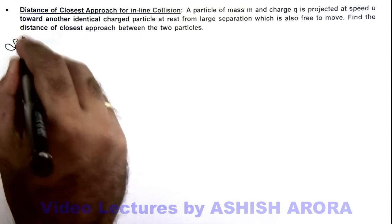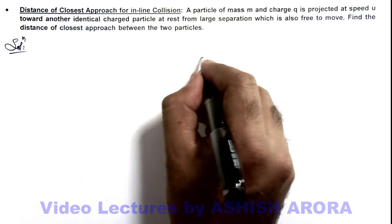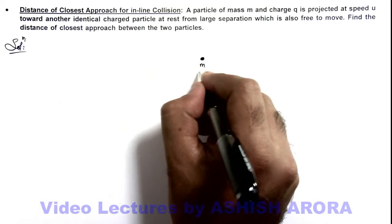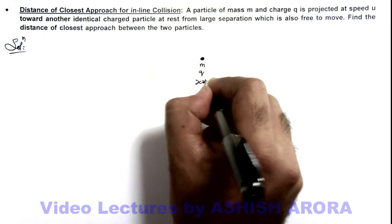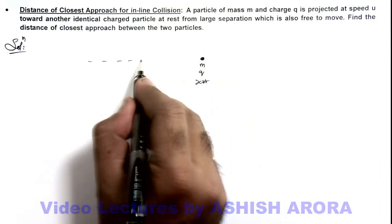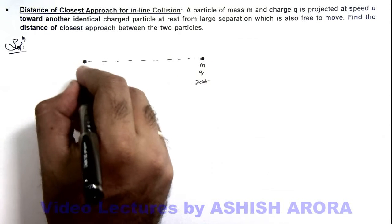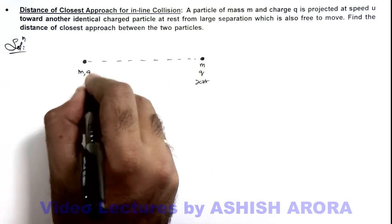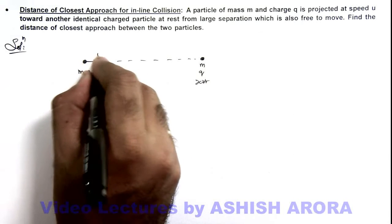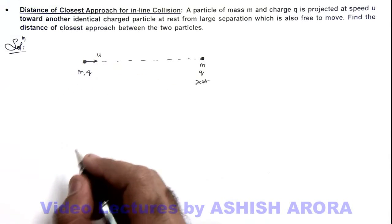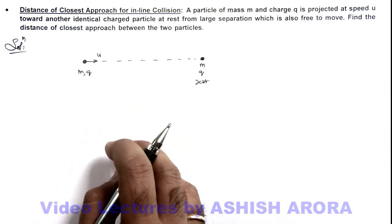If we have a look at the situation, there is one particle of mass m and charge q which is at rest. Toward this particle, from a far away distance, another particle of same mass and charge q is projected with an initial speed u. We are required to find the distance of closest approach.